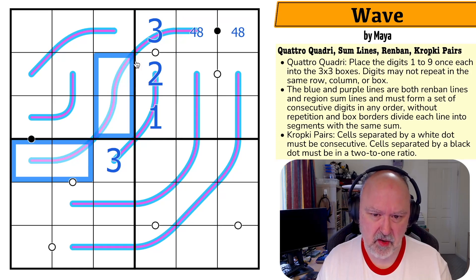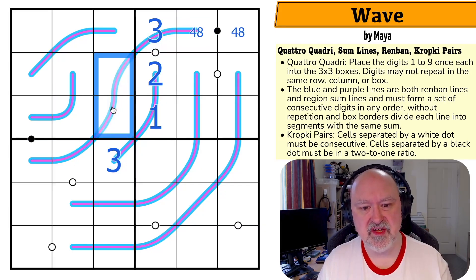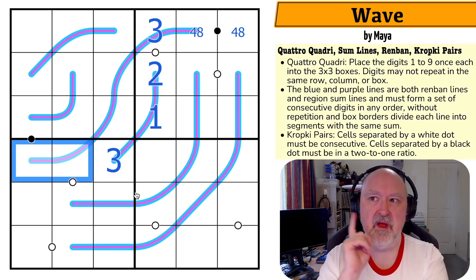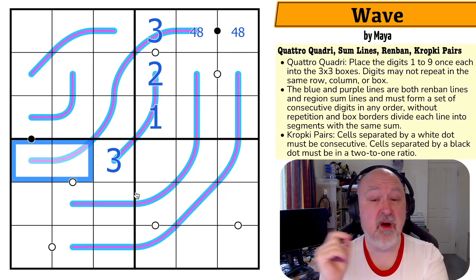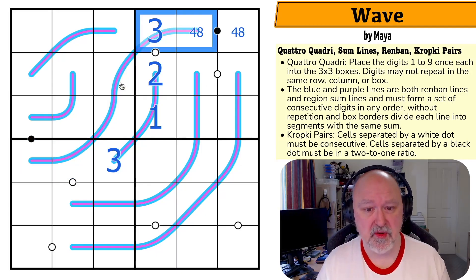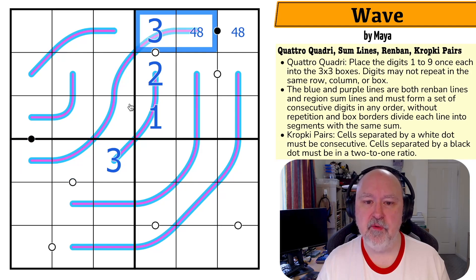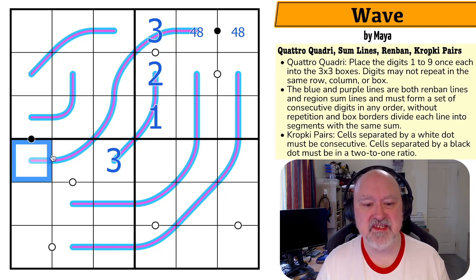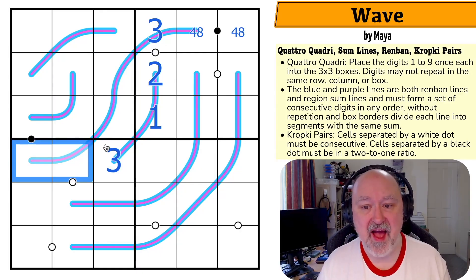Let's look at this line. That section, that section, and that section - if this was three, eight, they sum to eleven, so the other segments would also have to sum to eleven. Theoretically that's possible: three, eight, four, seven, five, six actually works. And three, four also might work because you could do three, four, one, six, and two, five - a one through six line. They both work, which is unexpected.